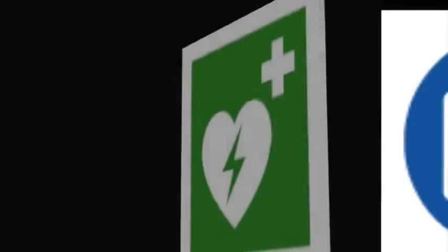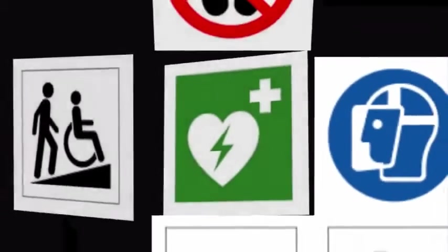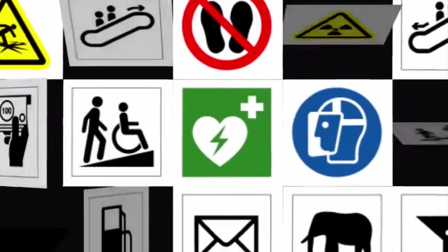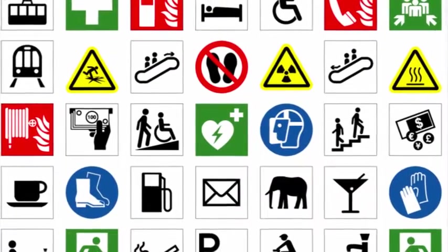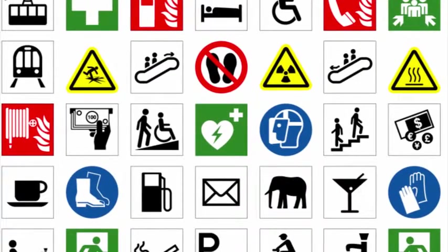The ISO Technical Committee 145 standardizes graphical symbols on a worldwide basis, as well as safety sign formats, safety label formats, and colors — and how you integrate the symbols and colors onto signage so that safety can be communicated on a worldwide basis consistently. That's the key: consistency.